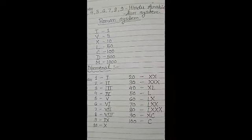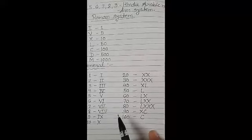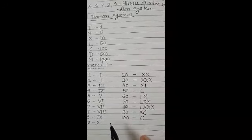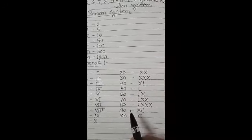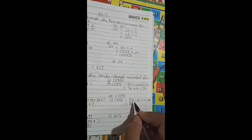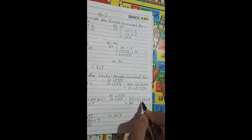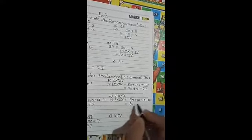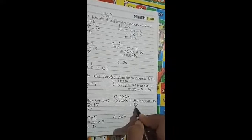Students, now according to these, you have to try writing numbers from 1 to 100 by yourself. 10 plus 10 plus 10, 10 plus 10 means 50 plus 10 plus 10 plus 10. That will be 80. Okay?